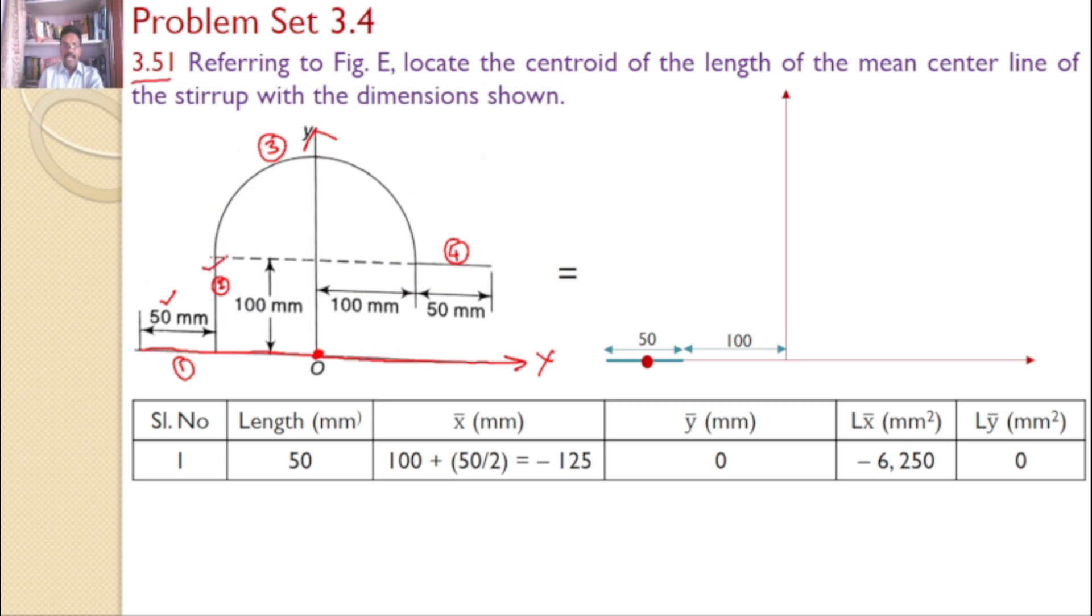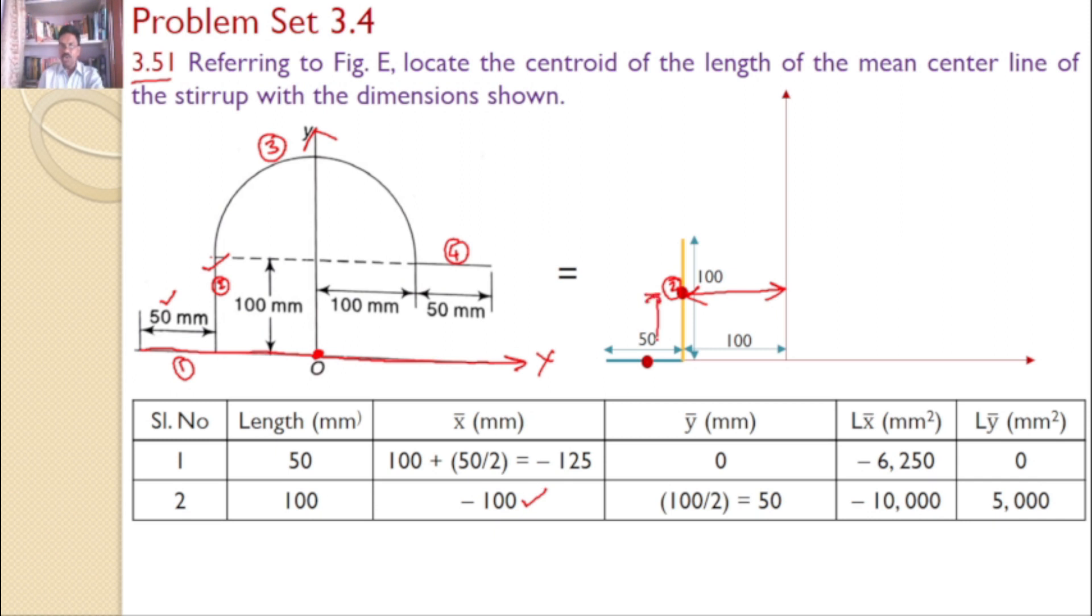Now, consider the second line. This is a length of 100 mm and this is a vertical line. The centroid for the second line is here, which is at a distance of 100 from the y-axis. But it is towards the left side, so it is negative 100. And this coordinate is 100 by 2, which equals 50. Similarly, I can calculate Lx-bar and Ly-bar.